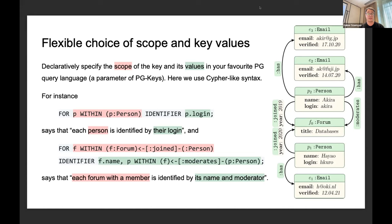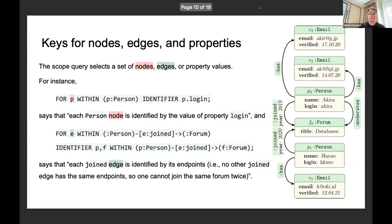Another example: suppose we want to specify that each forum having a member is identified by the name of the forum and its moderator. PG-Keys would be: for those f within this pattern, f binds to a node labeled forum with an incoming edge labeled join from a node labeled person. For each of these f, they will be identified by their name property and the identity of the person at the other end of a moderator edge coming into that forum. That's the first part. It's very flexible, an arbitrary graph pattern in your graph pattern matching query language.